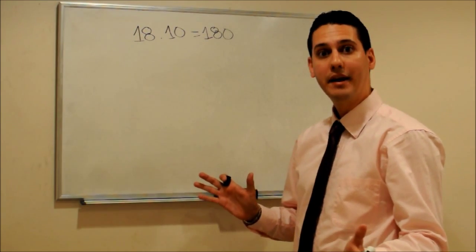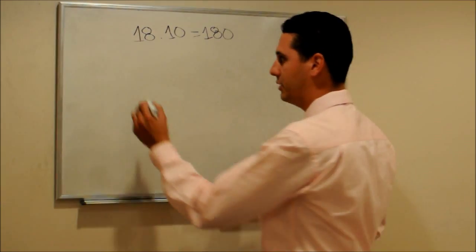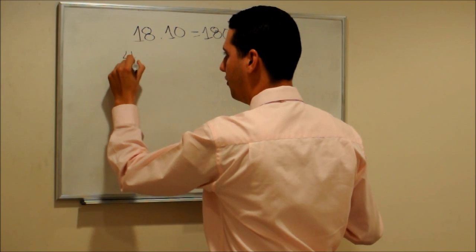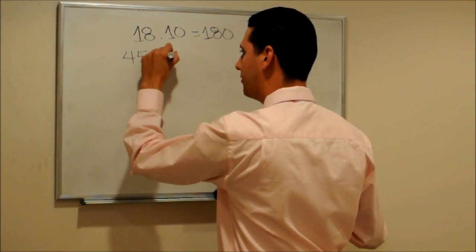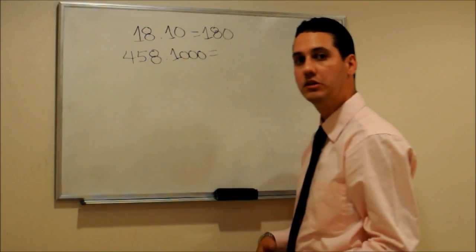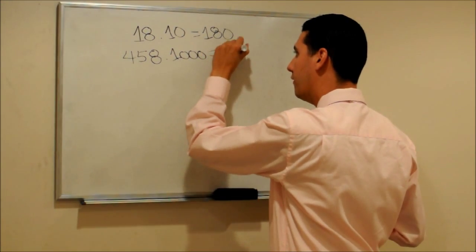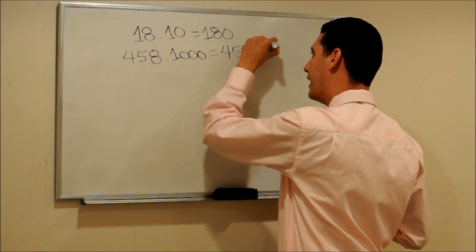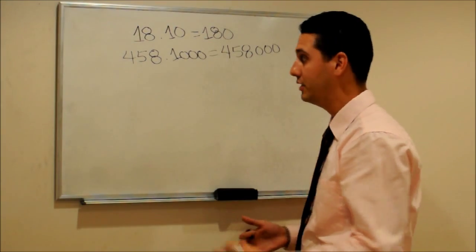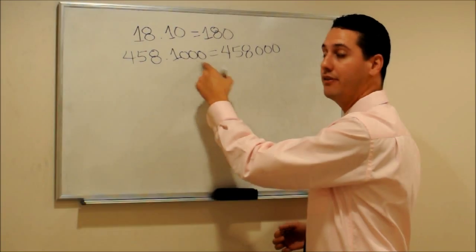What if we want to multiply by 1000? For example, 458 times 1000. So the answer would be 458 thousands because we need to add as many zeros as we have here.